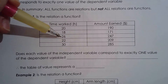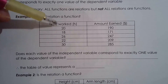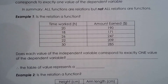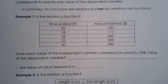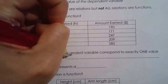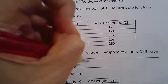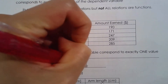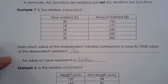Looking at the values — 20, 18, 26, 22, 30 — all the independent variable values are different. So of course this fits the definition of a function: each value of x gives exactly one value of y. The answer is yes — this table of values represents a function.